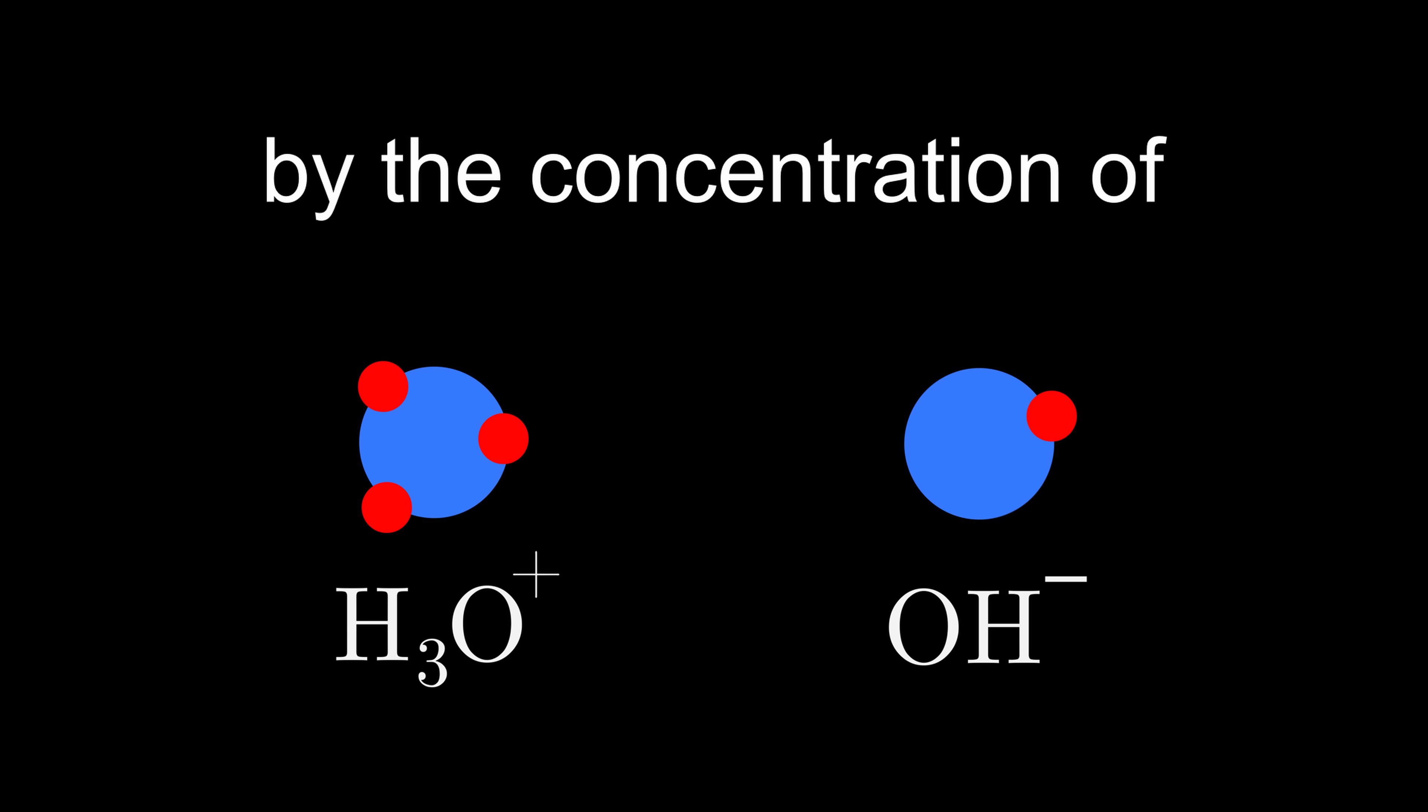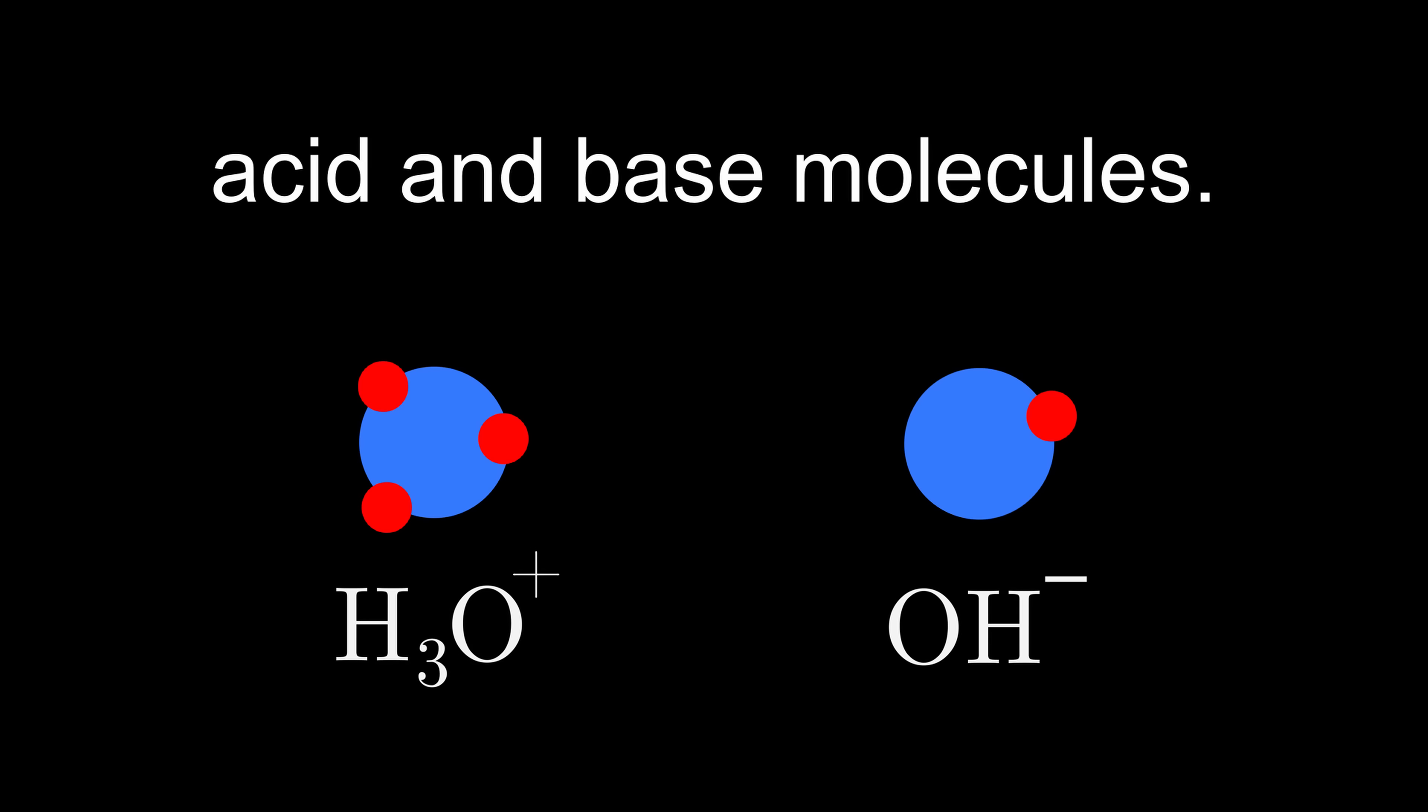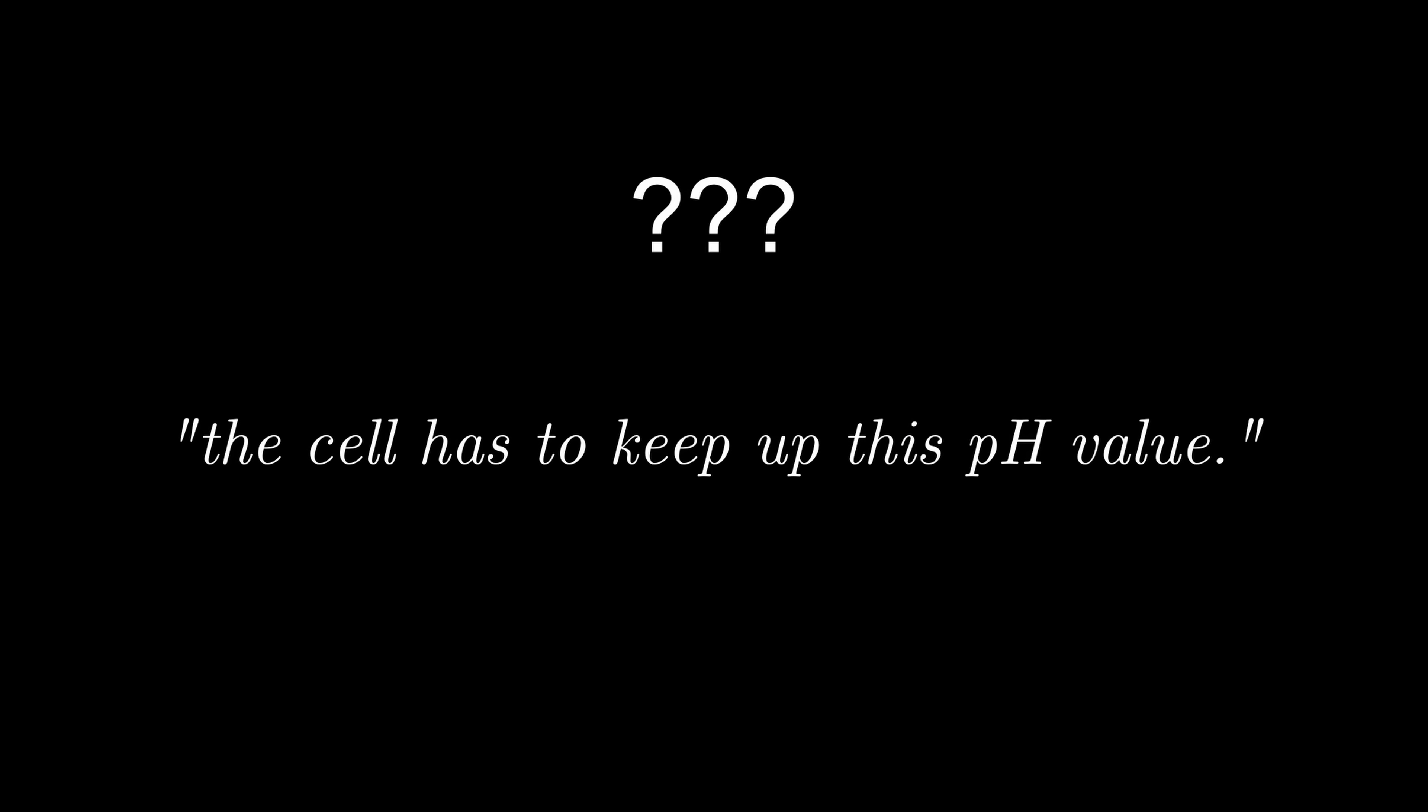You see, enzymes for example only work in a very specific environment, let's say some specific pH value. If this changes too much, the enzymes will denature and won't work anymore. To counter this, the cell needs to constantly keep up this specific pH value which is controlled by the concentration of acid and base molecules. Okay, but like, how does the cell do that?